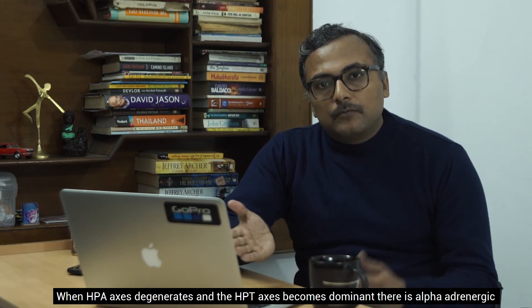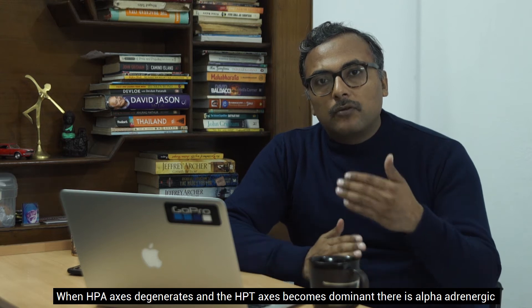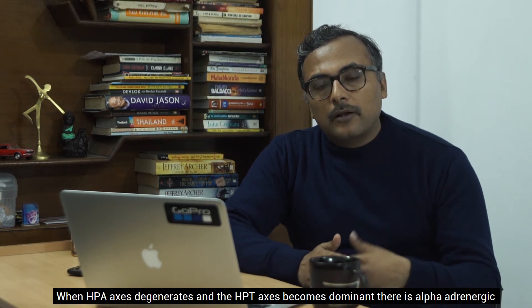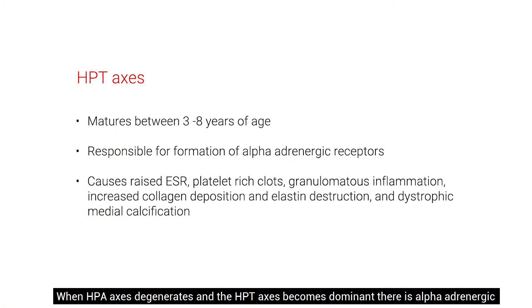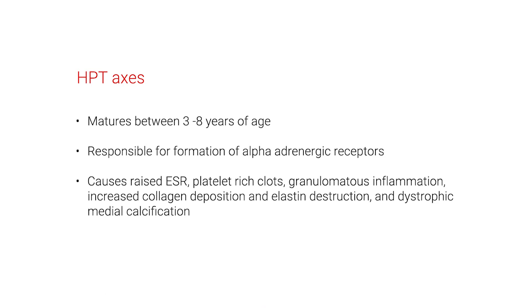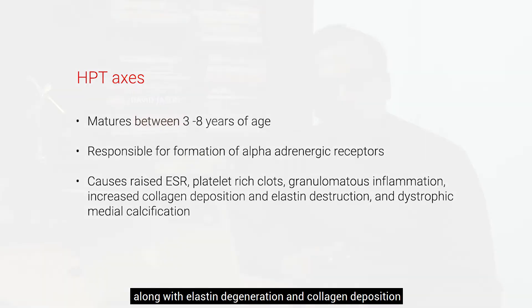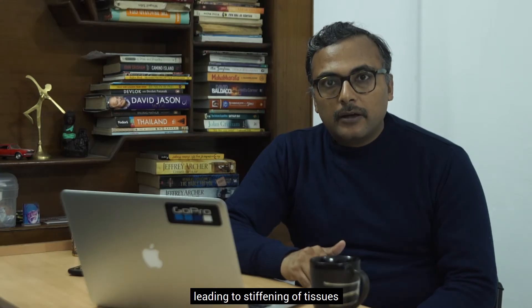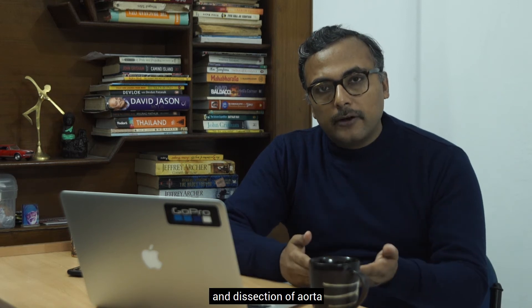When the adrenal axis degenerates but there is still high stimulation coming from the hypothalamus, there will be alpha adrenergic stimulation due to the thyroid axis. This results in lymphocytic infiltration of the tissues along with increased collagen deposition and increased elastin degeneration.